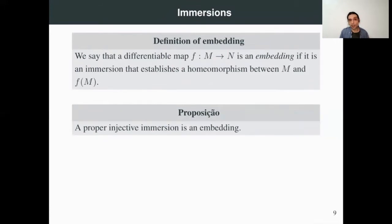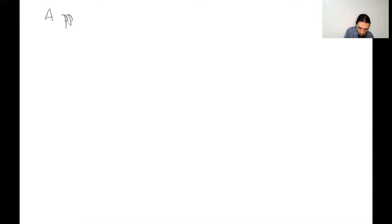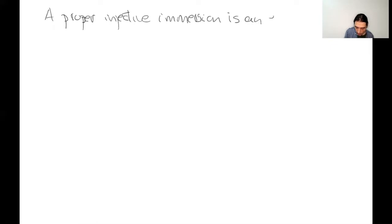And it is not an embedding — the image of the line is not homeomorphic to the line. But let's see that if we have an injective immersion that is proper, it is always an embedding. The result is: a proper injective immersion is an embedding.